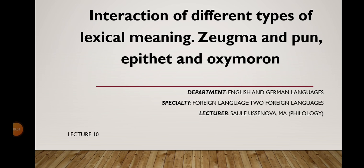Welcome back to our lectures on stylistics. This lecture is being designed for the students of the department of English and German languages. The theme of this lecture is interaction of different types of lexical meaning: zeugma and pun, epithet and oxymoron.